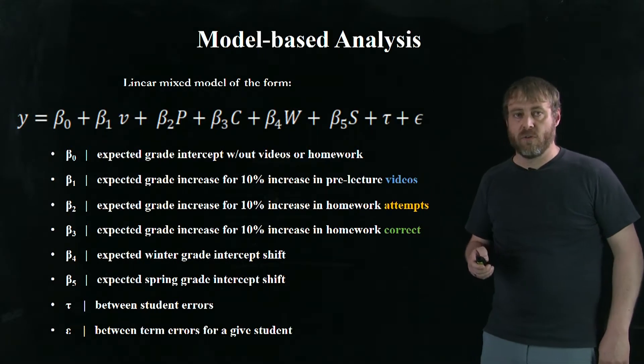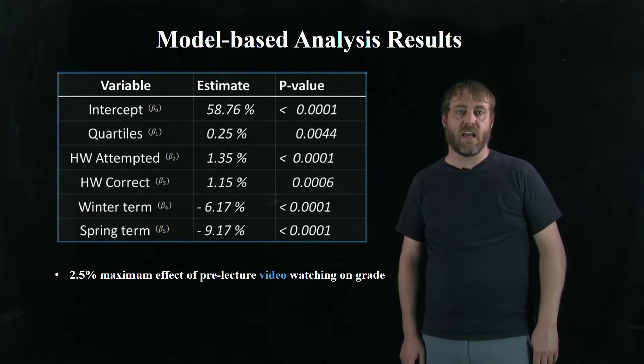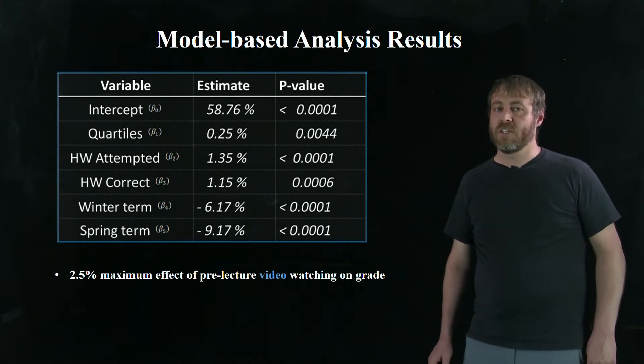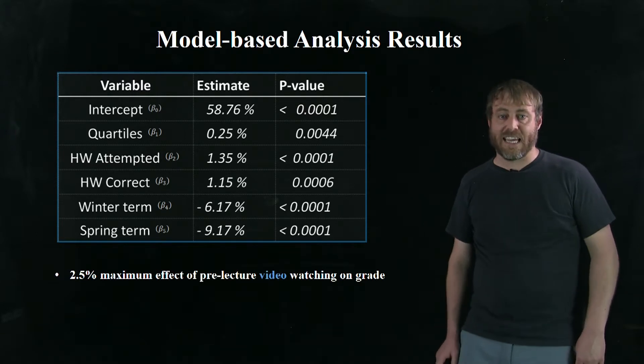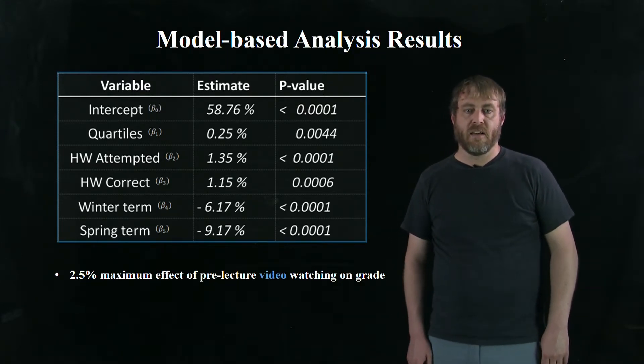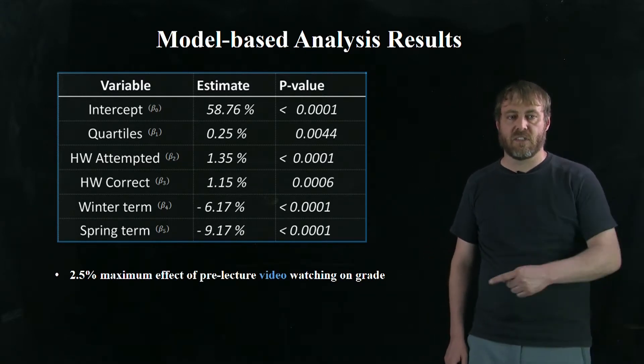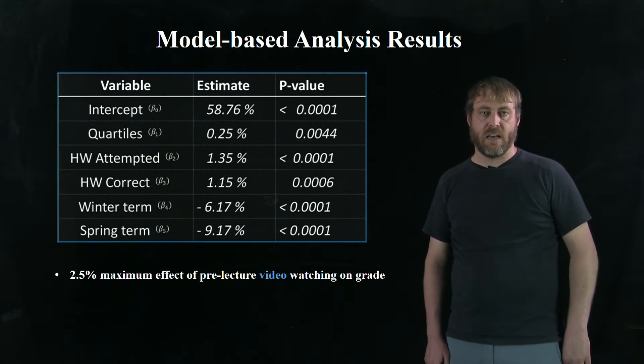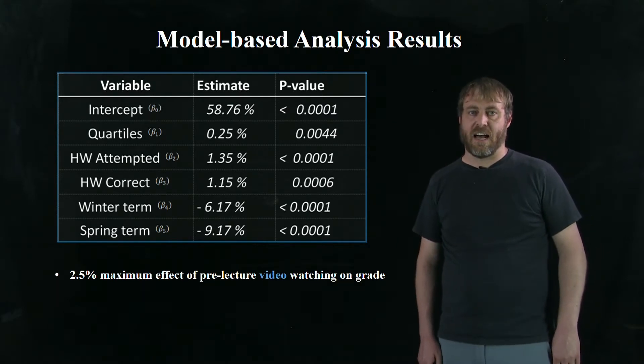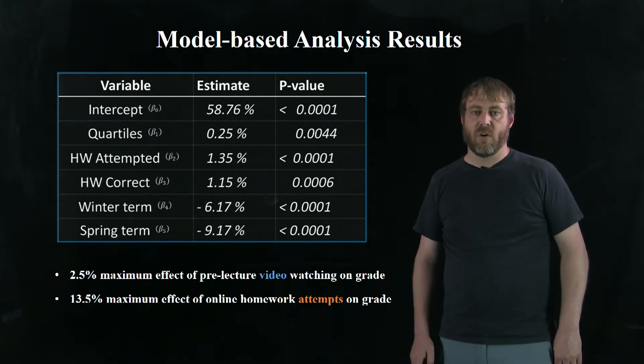So we ran this through linear mixed model analysis and we were able to create this table of values. And first thing we noticed is that we actually had some pretty good statistics. Our p-values are significant, meaning that we do have a valid hypothesis and this can be used to quantify the effect. First thing you do notice then when you go deeper is videos didn't have a huge effect. About two and a half percent maximum effect on expected grade. But that's not that unusual because, again, we said videos is really early in the learning cycle. It's part of being familiar with the material. But if you ask any physicist, they're going to tell you you need to do physics to actually get better at physics.